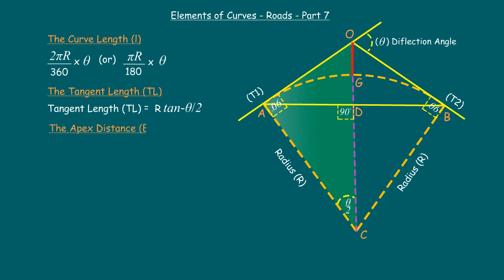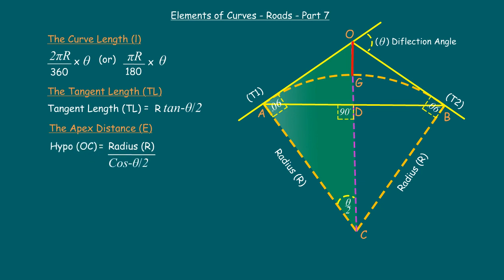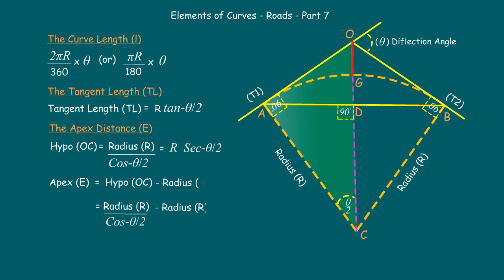Now let us see the apex distance, also known as the external distance E. Using the same right-angle triangle: cos(θ/2) = adjacent side / hypotenuse. The adjacent side is radius R and the hypotenuse OC = R / cos(θ/2), also written as R·sec(θ/2). Therefore, apex distance E = (R / cos(θ/2)) − R, or R·sec(θ/2) − R. When designing curves, if the apex distance is known from the field, the radius can be calculated from it.